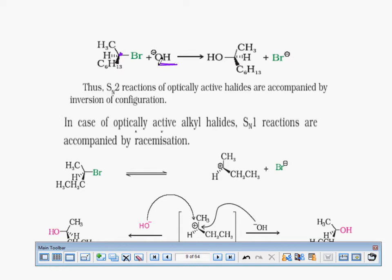There is a substitution. Br minus is getting substituted by OH. So you get the product. Now what you have to verify is whether there is a difference in the optical activity or not. Which means if this was rotating the plane of polarized light towards right, will this be rotating it towards right or left? That is what you have to decide. Now see how it happens.